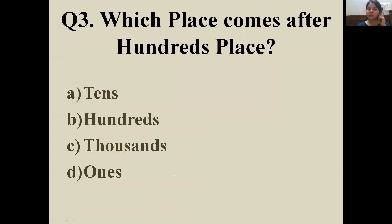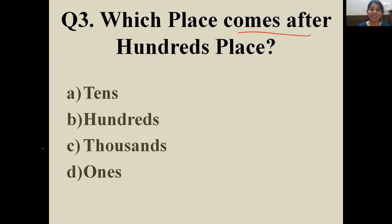Question number three: which place comes after hundreds place? 'After' means the next place. It was an easy one — ones, tens, hundreds, and thousands. So the correct answer is C: thousands. Very good!